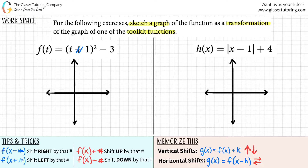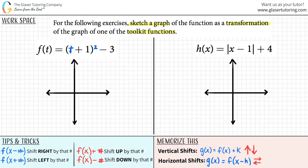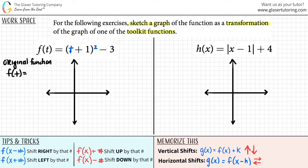Strip away all of the big numbers and only get down to what is happening to that variable. The original function does not have a plus one — get rid of the big numbers. And the original function doesn't have a minus three. However, it would be t squared. Being squared or cubed or in the denominator — those things you cannot strip away, only strip away the big numbers. So your original function for this one is f of t equals t squared.